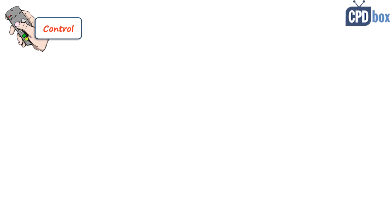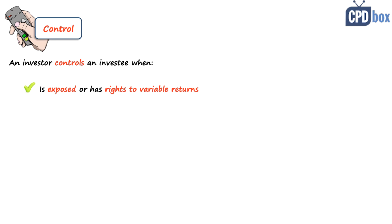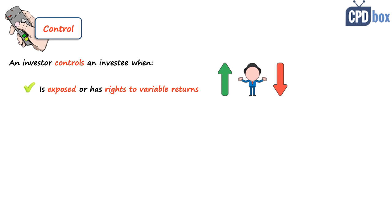Let's take a look at control first. An investor controls an investee when it is exposed to, or has rights to, variable returns from its involvement with the investee — which will be a subsidiary in this case. This basically means that you are not receiving a fixed return such as a coupon or preference dividend, but you can receive dividends from profits, or nothing if the subsidiary makes a loss.